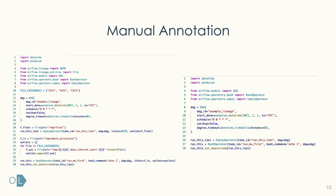Previously, you could use a lineage backend where you manually annotate your DAGs. The example on the left shows how to use the feature from documentation, and on the right I've removed the annotation. That manual approach turns 18 lines into 30 lines of code — much longer if you look at character count — meaning you have to do a lot more work.